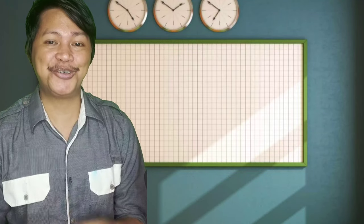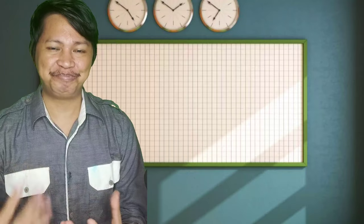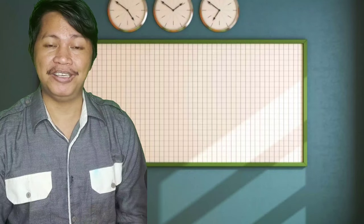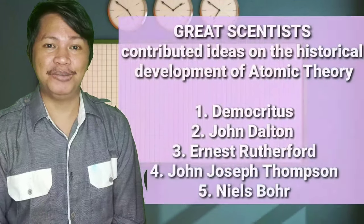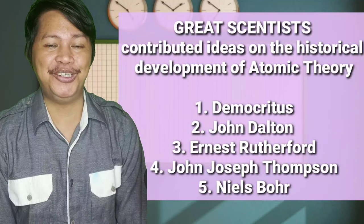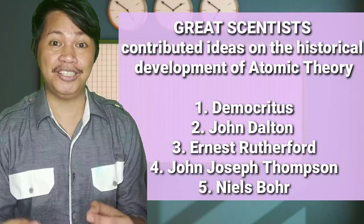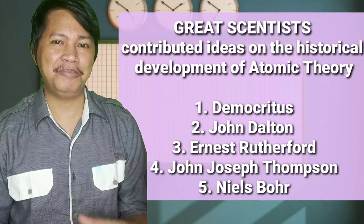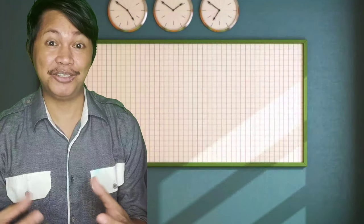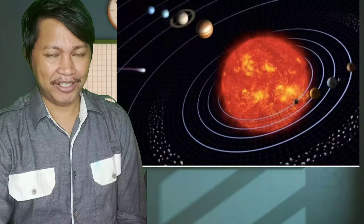And speaking of the development, there are a lot of scientists who contributed with regard to this atomic theory. We have Democritus, John Dalton, Ernst Rutherford, JJ Thompson, and of course Niels Bohr, who described the structure of atoms like a solar system.